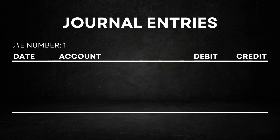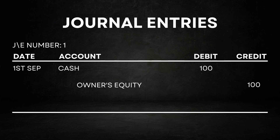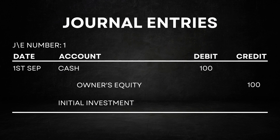Next, we have the journal entry date, which represents the date when the journal is posted in the general ledger. This date is significant as it determines the accounting period in which the transaction will be reflected. Following that, we'll list the names of the accounts impacted by the journal entry — for example, Cash and Owner's Equity. Notice how Owner's Equity is indented? This indentation helps us identify the account that is being credited. The journal entry also includes separate columns for recording the debits and credits for each account involved. Finally, there is a space for a journal description — it's essential to provide a clear and concise explanation, as it will serve as a reference for future use.